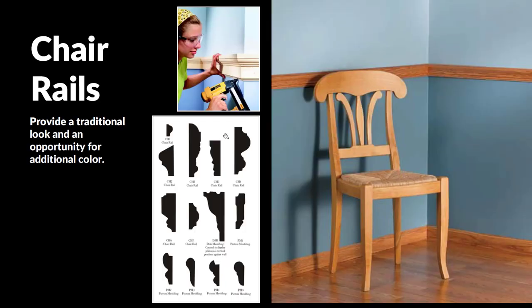We can also have chair rails. Chair rails hit at the height of the back of a common chair. They do two things: they protect the wall from getting dinged if somebody's sliding their chair back, and they also allow for a little embellishment, offering a traditional look. There are many different profiles that this trim could take — these examples show what the profile looks like in cross-section, and that profile runs all the way across the wall.